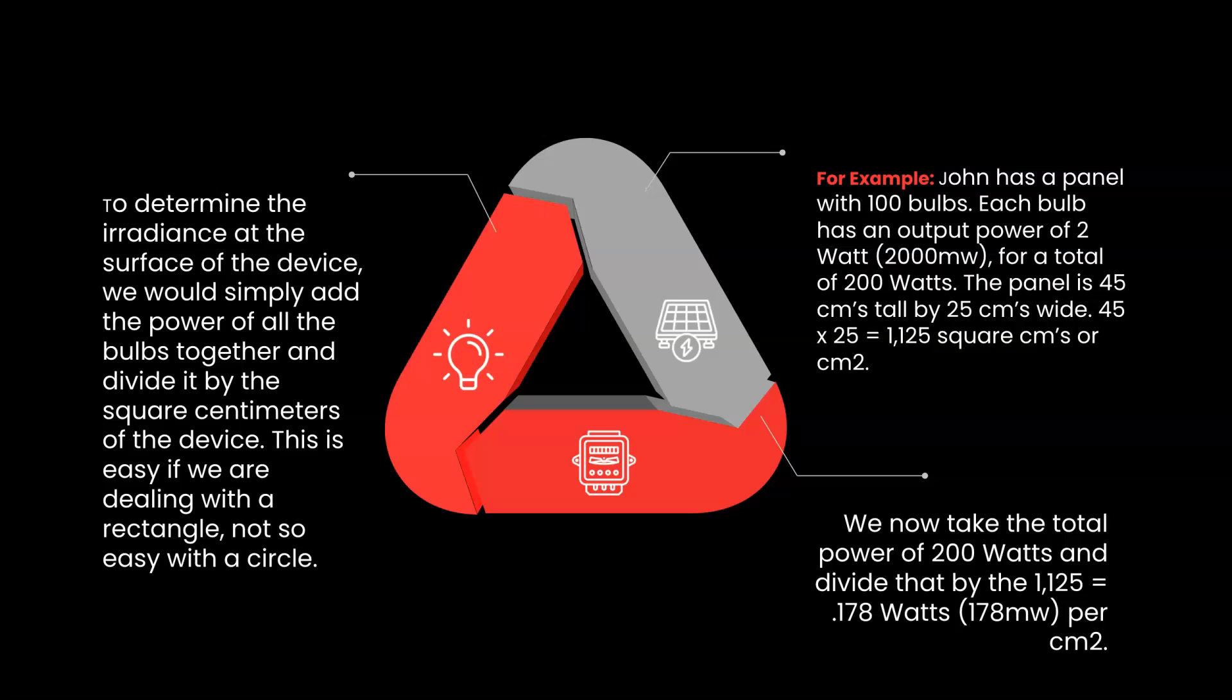This 178 milliwatts per centimeter squared is a common number you'll see for a panel at the surface. For a pad or helmet, that number will be much lower like 10 to 30 milliwatts per square centimeter. So you might think to go with the panel because it is so much more powerful, right?